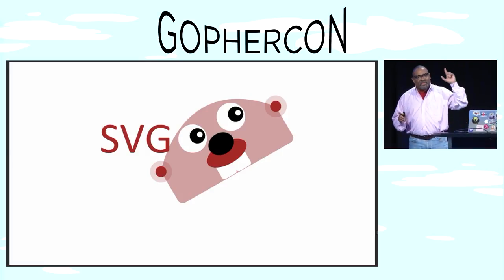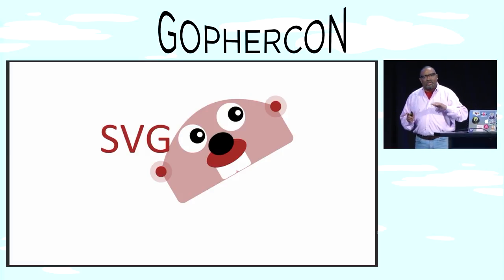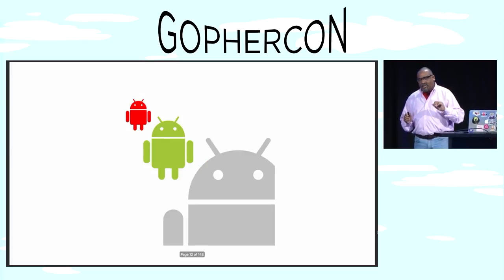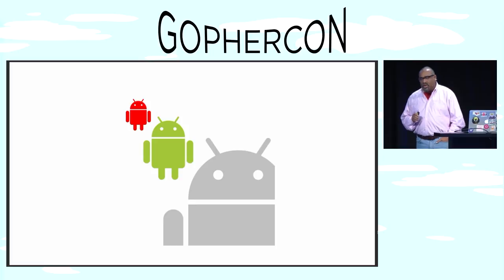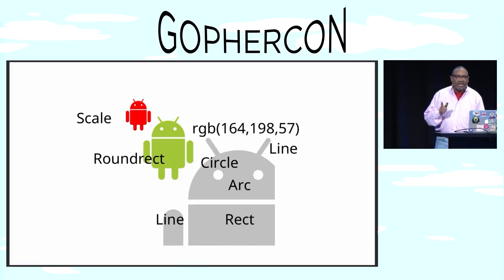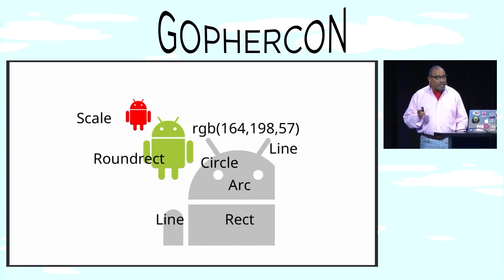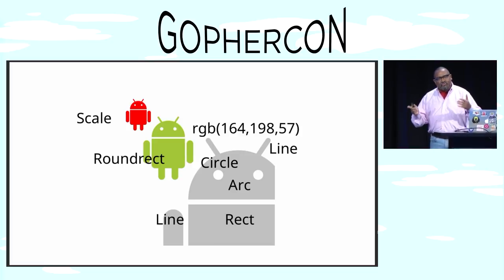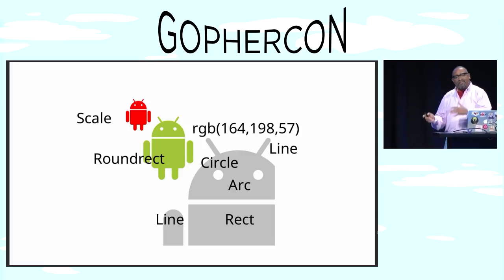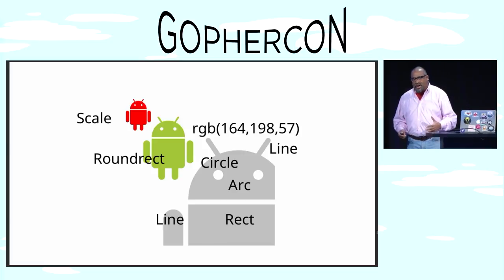SVG Go does one thing: it generates SVG to an IO writer. Consider Bug Droid — you may know him as the cute mascot for Android. But when I see him, I see what makes him up: lines and rectangles and arcs, circles and colors, round rects and scales. When you finally realize that all the information displays you see are made up of these elements, and you can program them, you have superpowers.